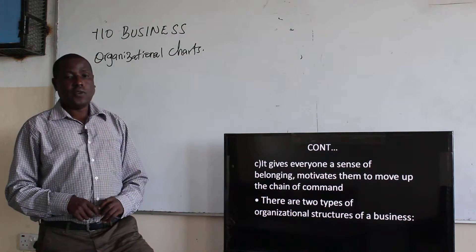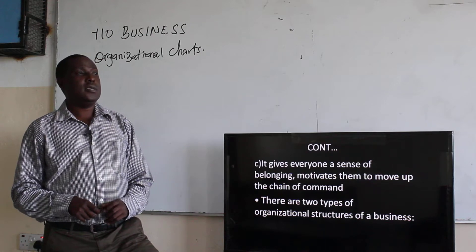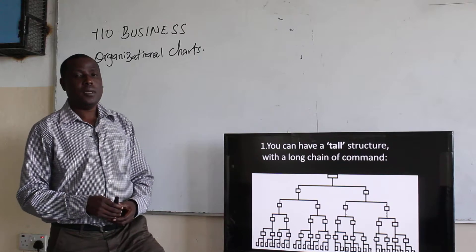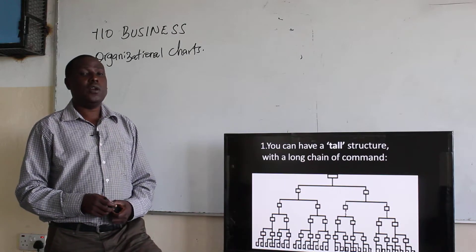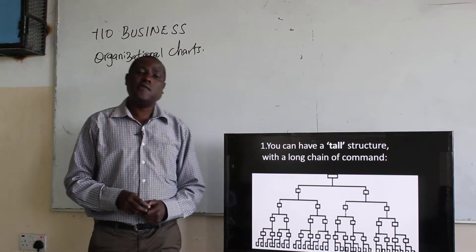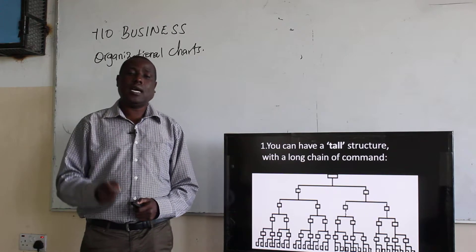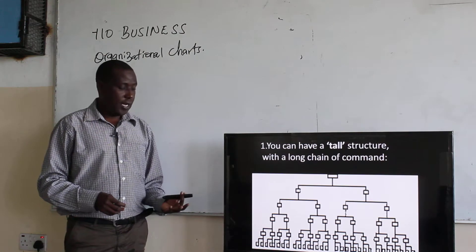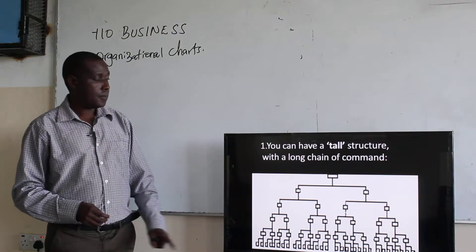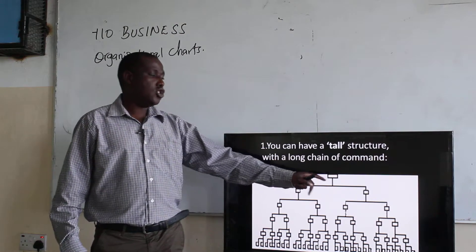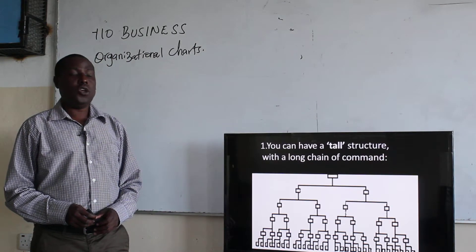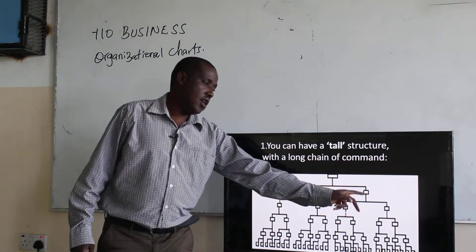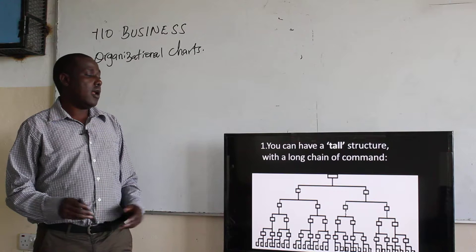There are two types of organizational structures for business. The first type of an organizational structure is where we have a tall structure with a long chain of command. As you can see here, we have the topmost leader, who will be the CEO. Under him, we have two, who could be directors.